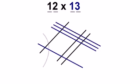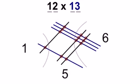Now we'll group together different lines and count the dots. Here we have six different dots. In the middle, we have five different dots. And on the other side, we have one dot. And that's the answer, 156.